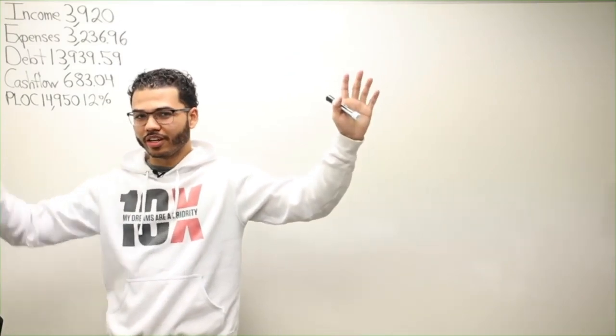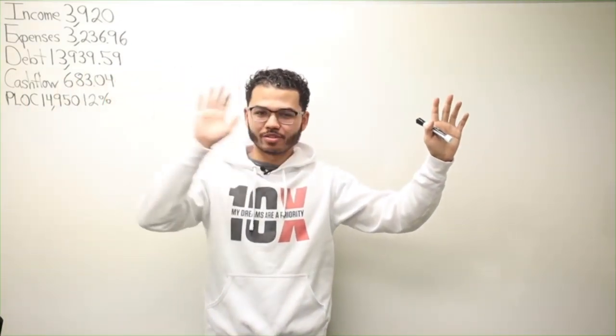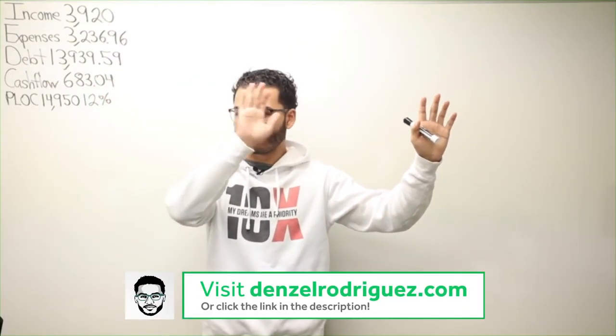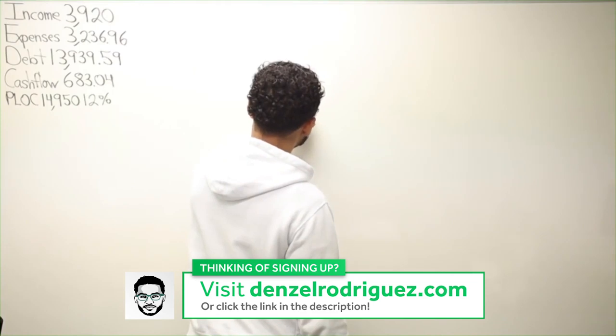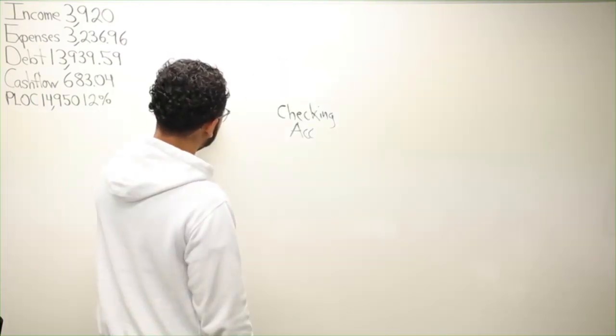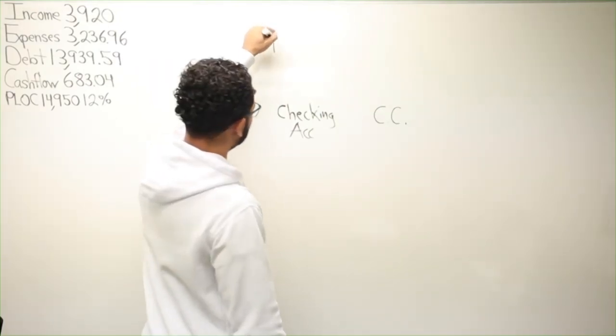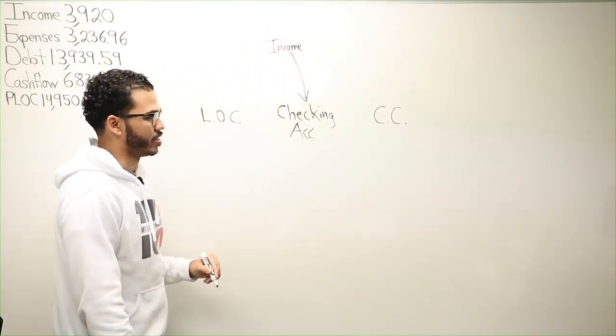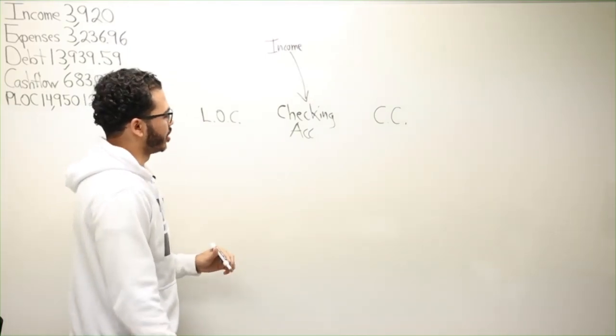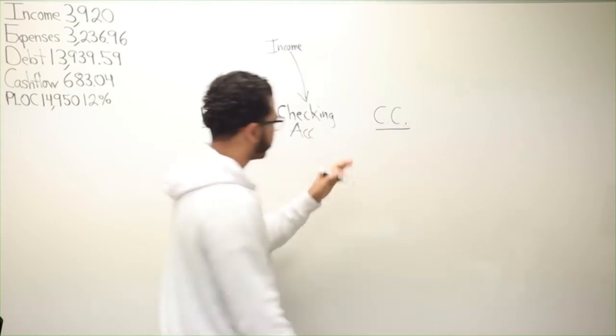If I have a credit card, a line of credit, and a checking account - three things, right? Your checking account where money comes in. We got a checking account, we have a line of credit, and we have a credit card. When you make money like everyone else does, it gets deposited into a checking account. We understand that. She's asking about using credit cards and line of credit simultaneously.